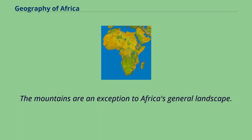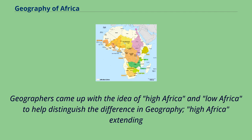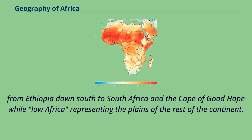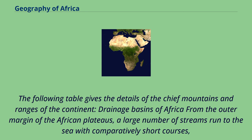The mountains are an exception to Africa's general landscape. Geographers came up with the idea of High Africa and Low Africa to help distinguish the difference in geography — High Africa extending from Ethiopia down south to South Africa and the Cape of Good Hope, while Low Africa representing the plains of the rest of the continent. From the outer margin of the African plateaus, a large number of streams run to the sea with comparatively short courses.